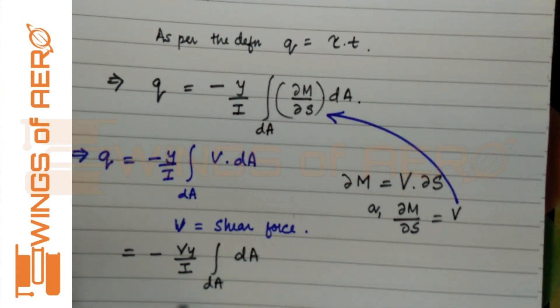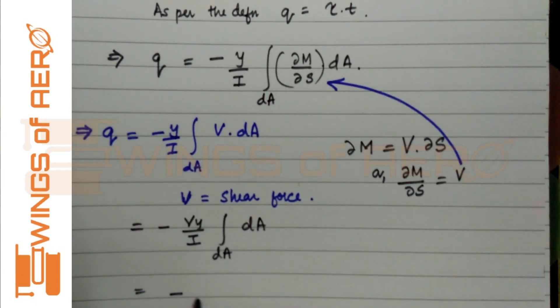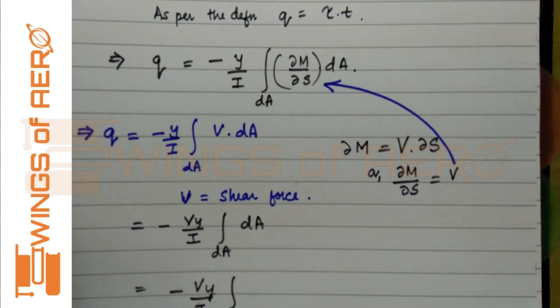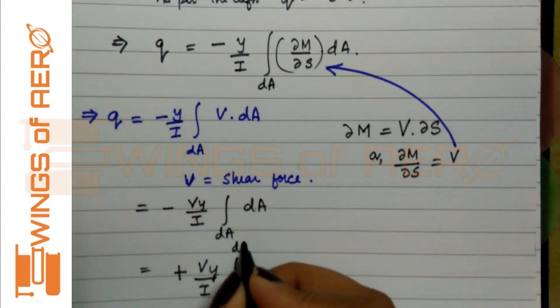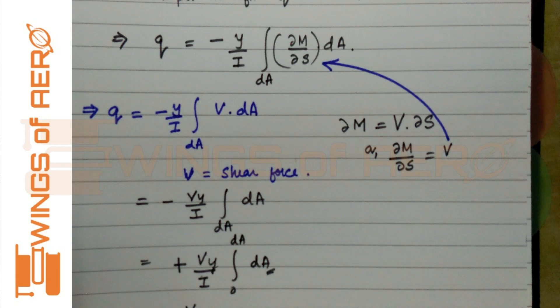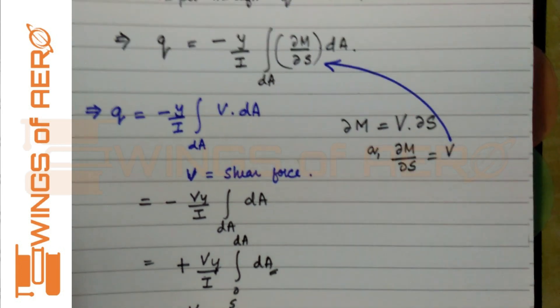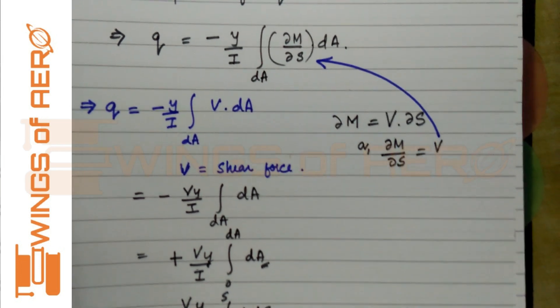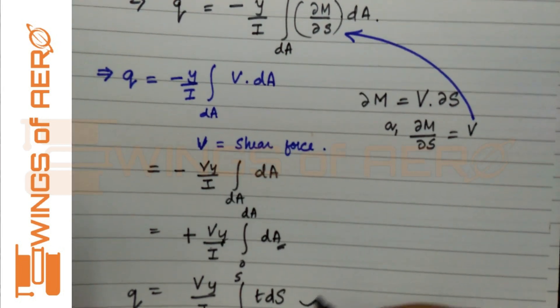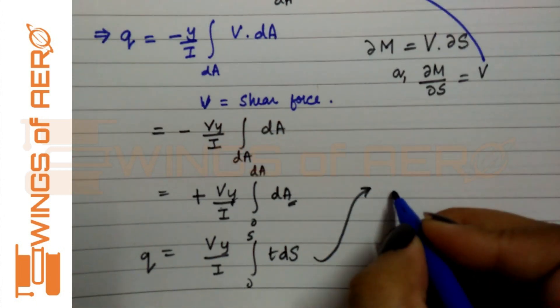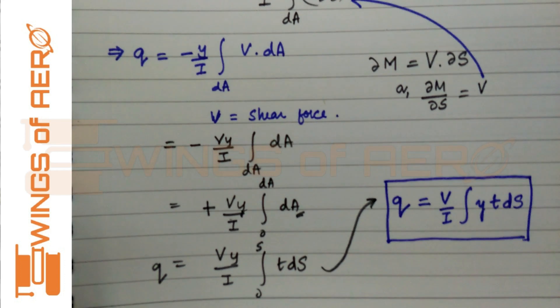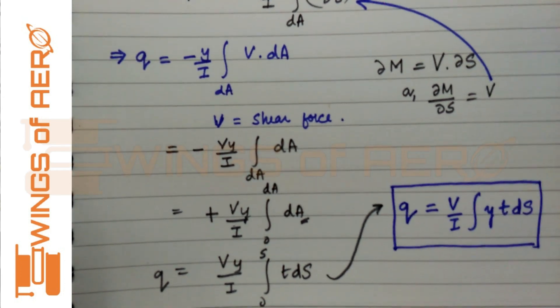So now, again, here we can write the limits as VY by I. What we will do when we want to change the limit zero to dA—we are going to split these terms. We can write q equals VY by I integral zero to s, t ds. Or if Y is varying, we can write q equals V by I integral y t ds. This is the general equation of shear flow for a symmetrical open section.